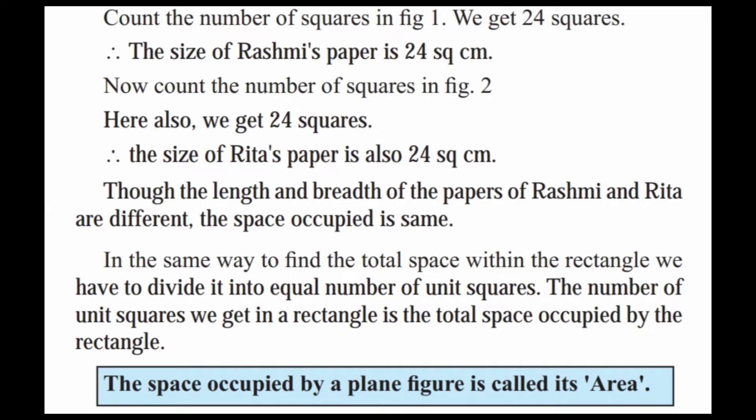Both papers give 24 square units. Though the length and breadth of the papers of Rashmi and Rita are different, the space occupied is the same.